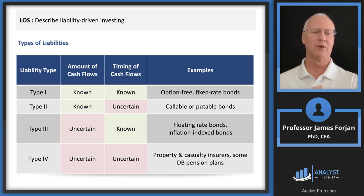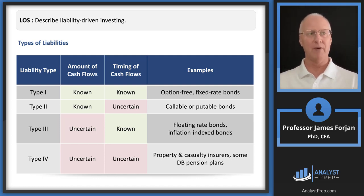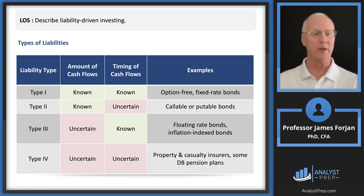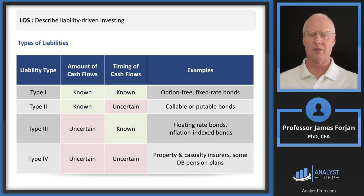This concept applies the 'known unknowns' framework to liabilities. There are four types — I would memorize these. Type one: known amount of cash flows and known timing — examples are fixed rate, option-free bonds. You know the coupon payments and their timing. Type two: if you add an embedded option like a call or put feature, the timing of cash flows becomes uncertain while the amount is known. Type three: remove the embedded option but add a floating rate bond tied to an index, making the amount uncertain. Type four: insurance and pension fund liabilities where both the amount and timing are uncertain.